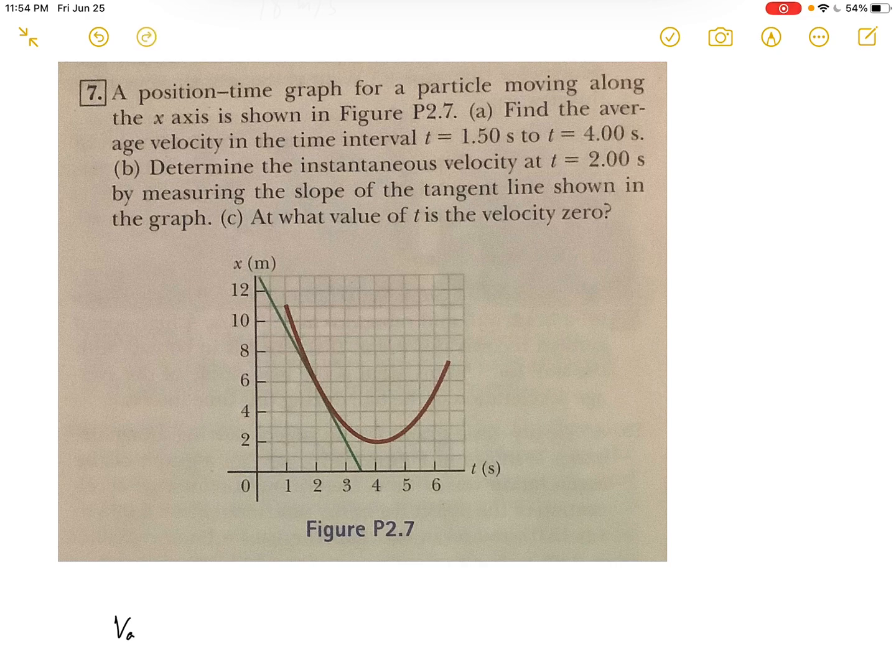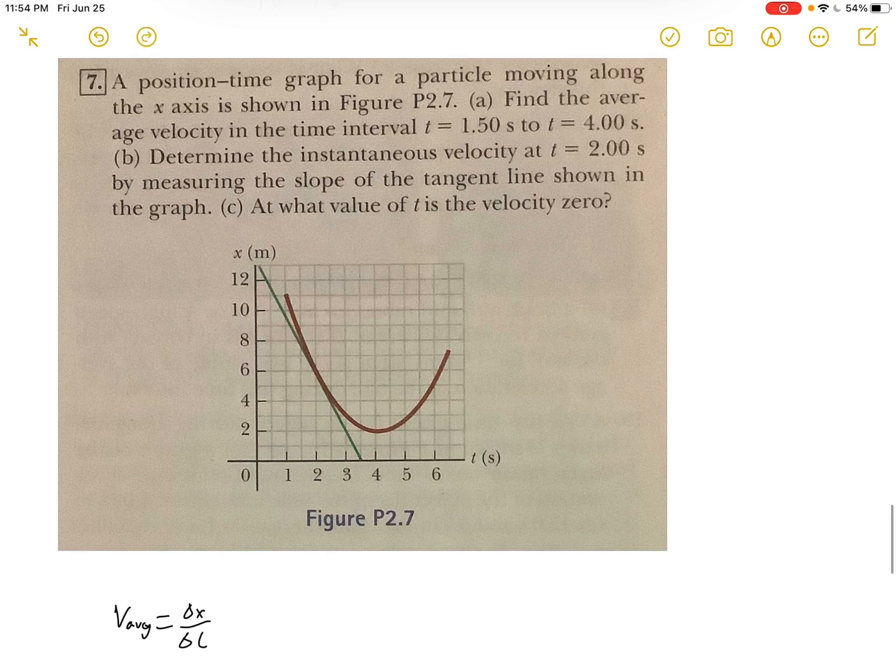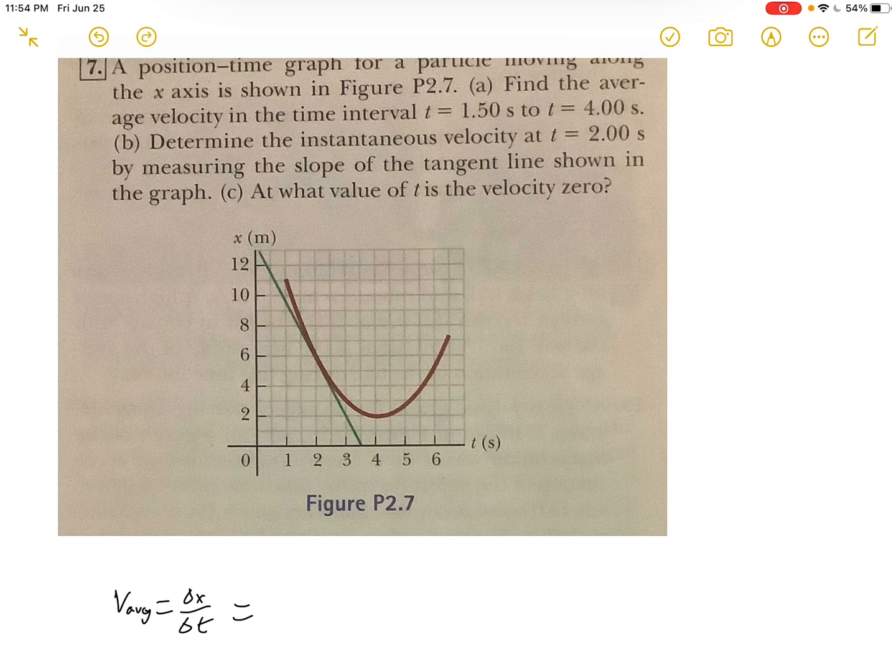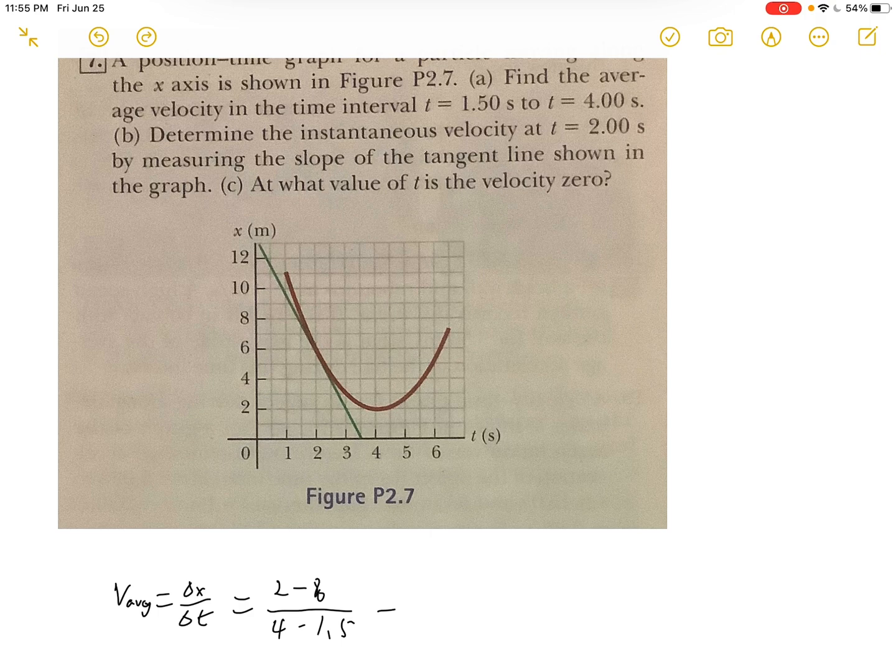So x at 4 seconds is 2, and x at 1.5 seconds is 8. Over delta t, which is 4 minus 1.5, this will give our answer which is negative 2.4 meters per second. This is the answer for part a.